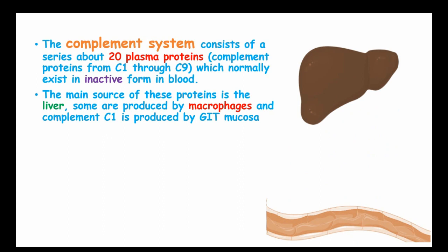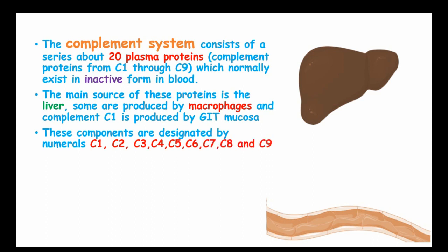Complement C1 is produced by the gastrointestinal mucosa. These components are designated by the numerals C1 up to C9. These components are rapidly activated in response to an infection.